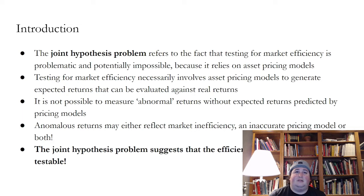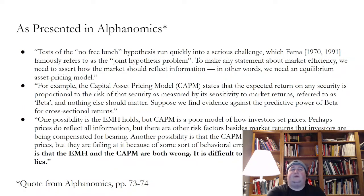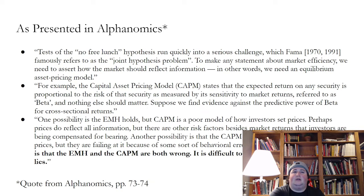That is the joint hypothesis problem. This is as presented in the book Alphanomics by Eric So at MIT, who was one of my advisors at MIT. This is the test of the no free lunch hypothesis, which you quickly run into a serious challenge. When they talk about no free lunch, what they're saying is you basically can't generate abnormal returns. The capital asset pricing model states that the expected return on any security is proportional to the risk of that security, as measured by its sensitivity to market returns, referred to as beta, and nothing else should matter.